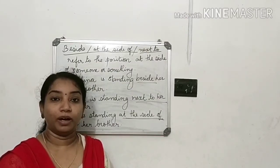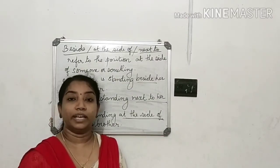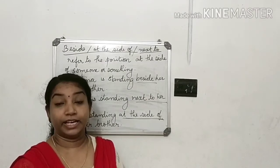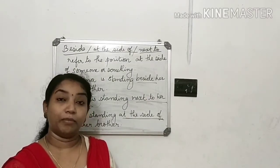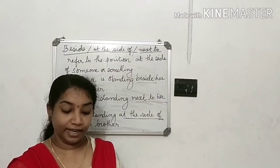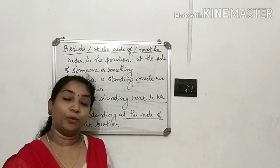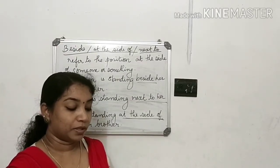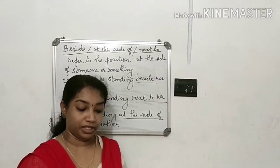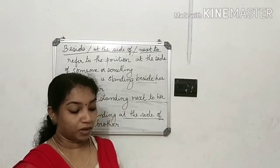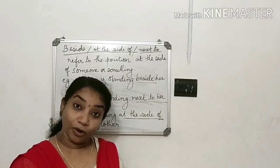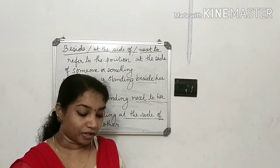Now let's move on to our exercise. Take out your textbook and open Chapter 10, Exercise number 1. I told you to do Exercise 1 in the last class, so we will just discuss the answers and move on to the next exercise. First one: match the position of the owl in the picture with the correct preposition. Where is the owl sitting? It is on the box.